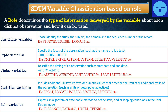Timing variables describe the timing of an observation, such as start and end dates. Examples include --STDTC, --ENDTC, VISIT, VISITNUM, LBDY, and LBTPTNUM.